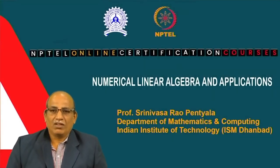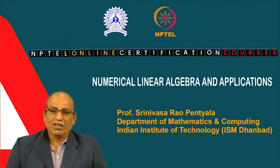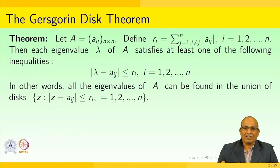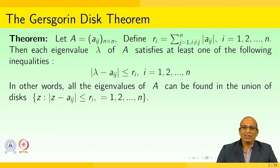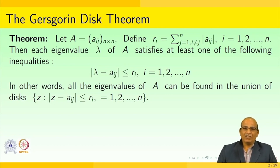Hello to everyone. Today we are going to have the 11th lecture on numerical linear algebra and applications. Let us recall quickly what we did in the previous lecture — we did eigenvalues and eigenfunctions and how they are associated with matrix solutions. Today we will be doing a very specialized theorem called the Gershgorin disk theorem, which shows how the eigenvalues of A can be found as the union of a disk.